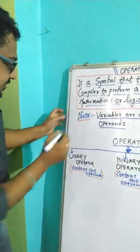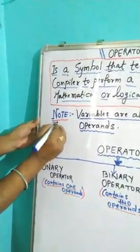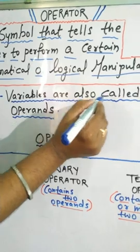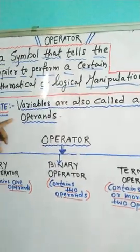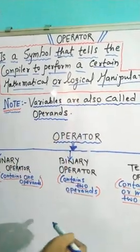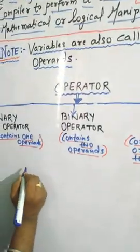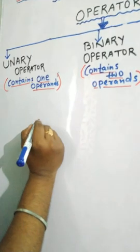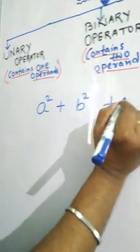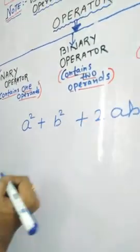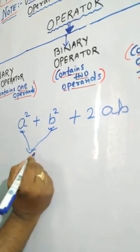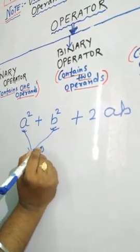It is very important to note the definition of operands. Variables are also called as operands — whatever variable we are using is also called an operand. For example, consider the formula a squared plus b squared plus 2ab. Here, a and b are the variables, and all these variables are called operands.